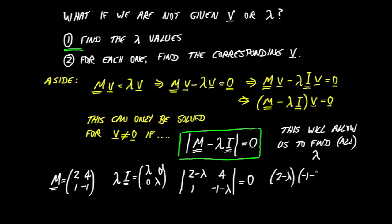So we just write out the determinant. 2 minus lambda multiplied by minus 1 minus lambda, down the diagonal, minus 4, the off diagonal, is equal to 0. All right, so we expand this out. So we've got minus 2, minus 2 lambda, plus lambda, plus lambda squared, minus 4, equals 0.